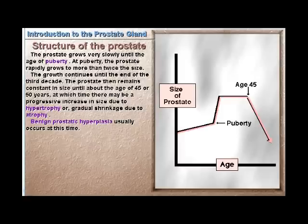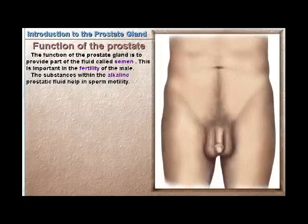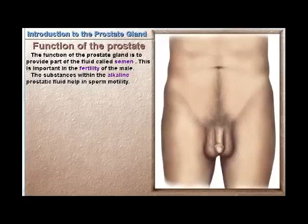Growth continues until the end of the third decade. The prostate then remains constant in size until about the age of 45 or 50 years, at which time there may be a progressive increase in size due to hypertrophy, or gradual shrinkage due to atrophy. Benign prostatic hyperplasia usually occurs at this time.